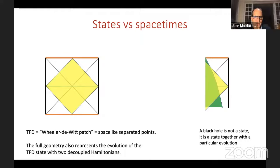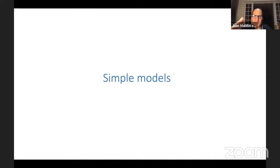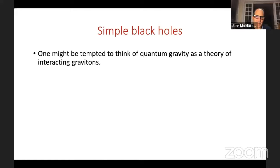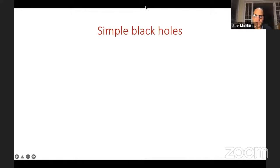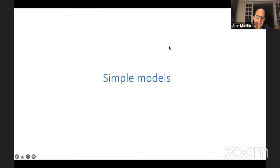Let me pause for questions. There's one in the chat — Takato is asking whether the Wheeler-DeWitt patch is the same as the domain of dependence. Yes — it's the domain of dependence of the particular Cauchy slice that passes through the two boundary points.